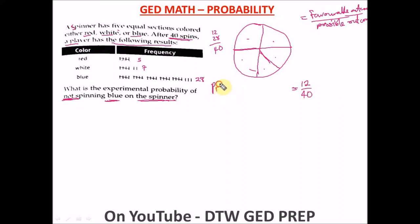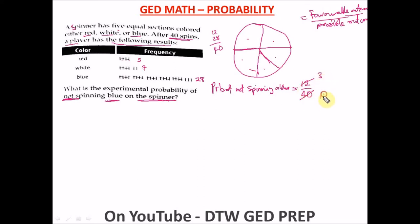The probability of not spinning blue is 12 over 40. We can reduce this: 4 goes into 12 three times and into 40 ten times, giving us 3 over 10. That is our answer.